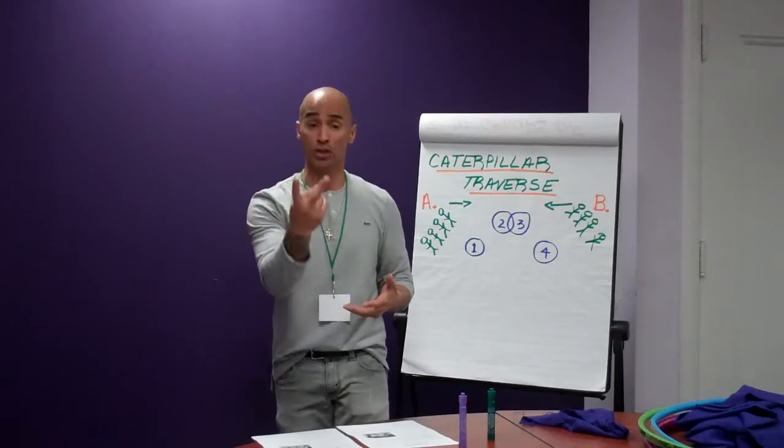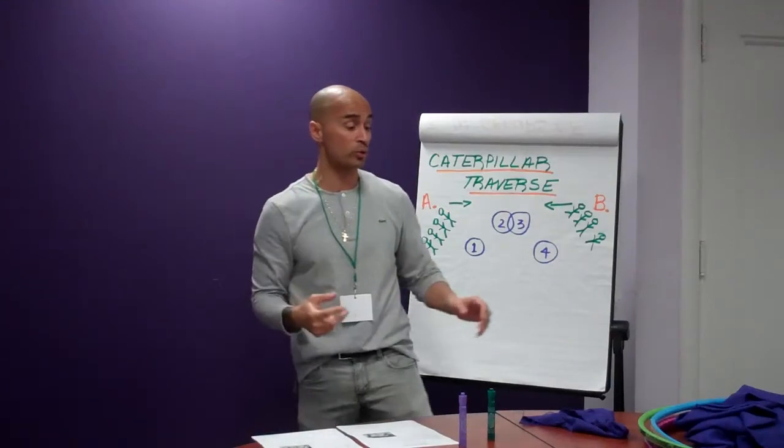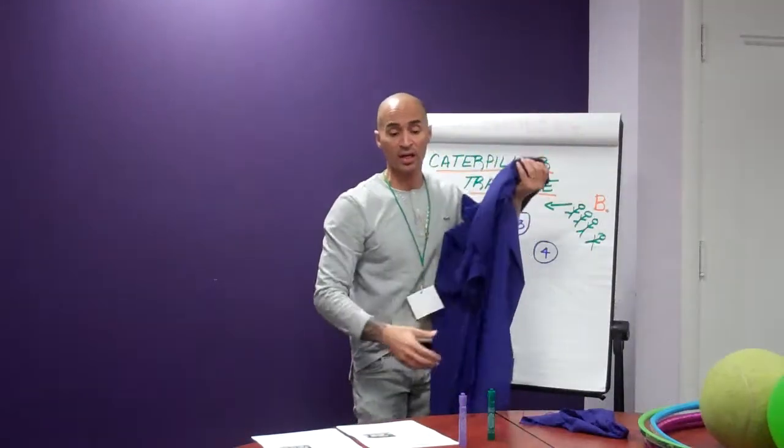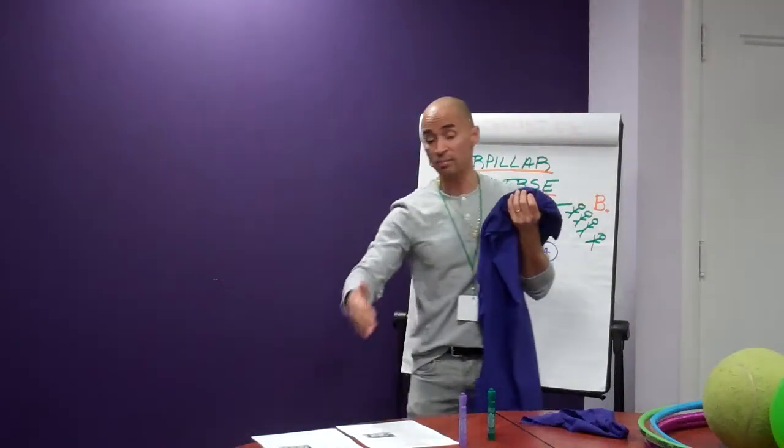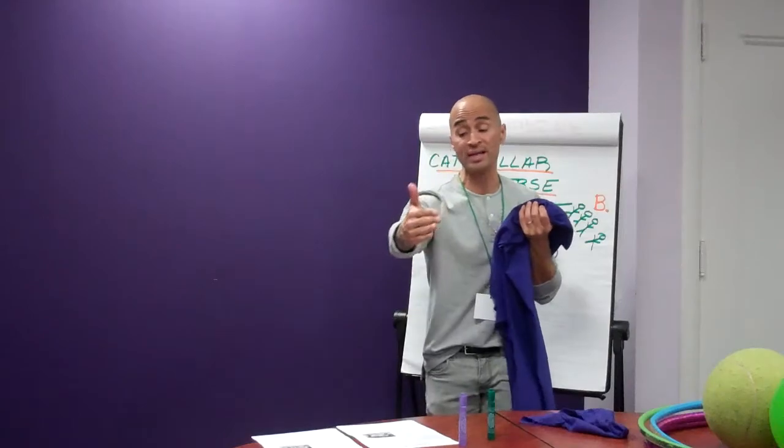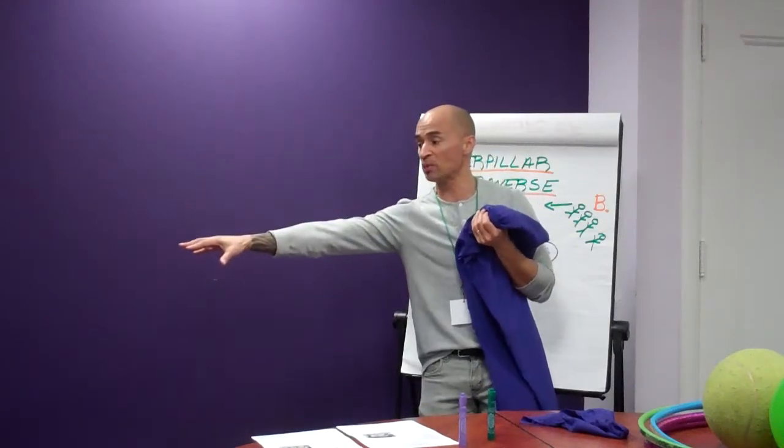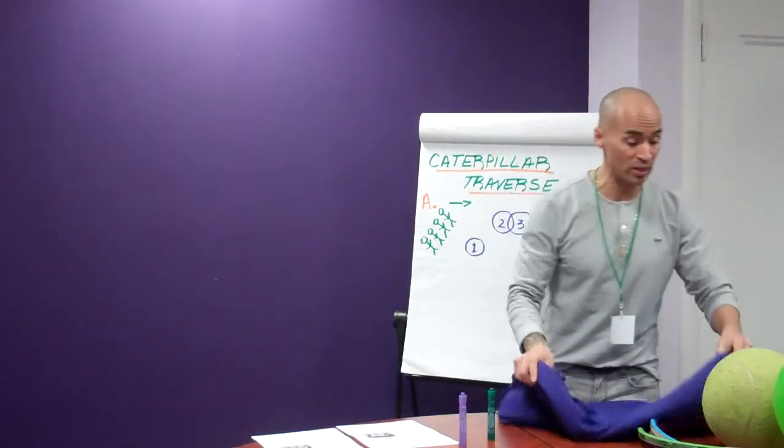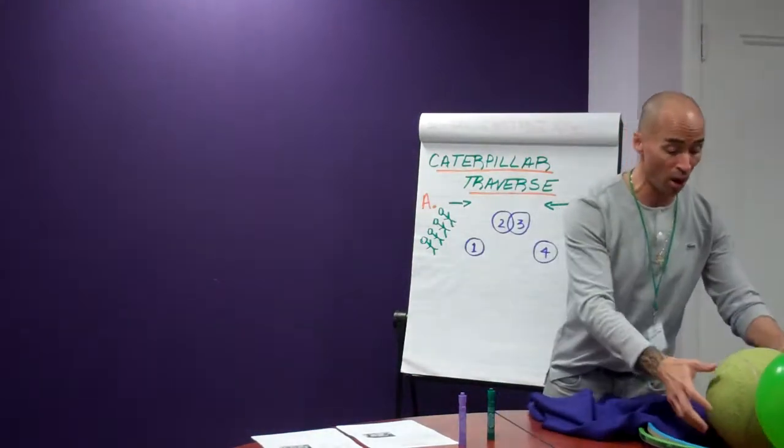You're going to divide your group into two equal groups. Each group will get a large sheet. You'll line up cones right down the middle to kind of act as your nets. So one group on that side, the other group on this side.